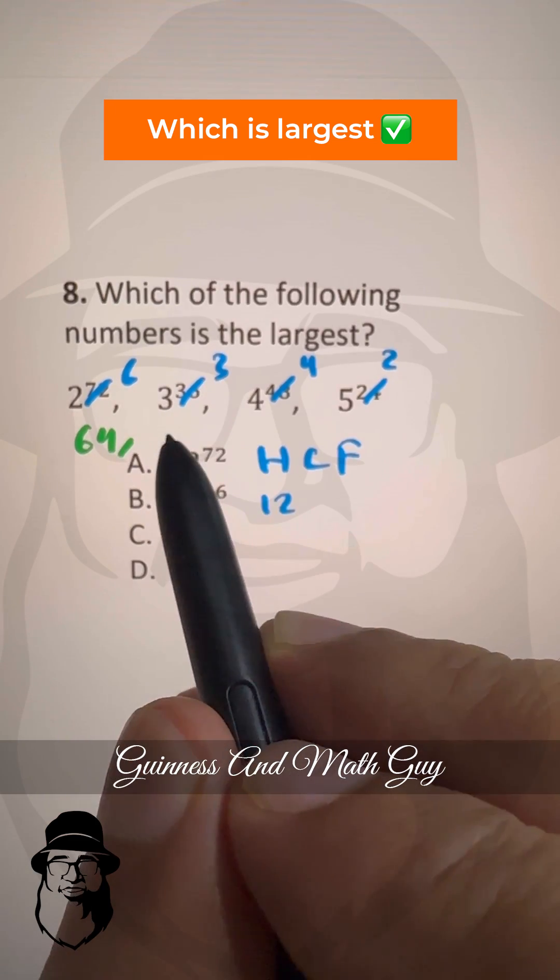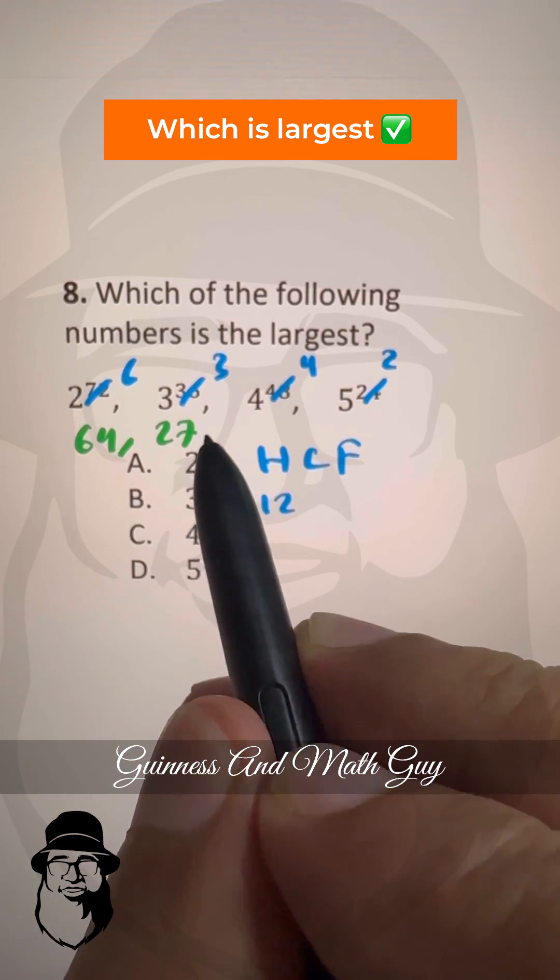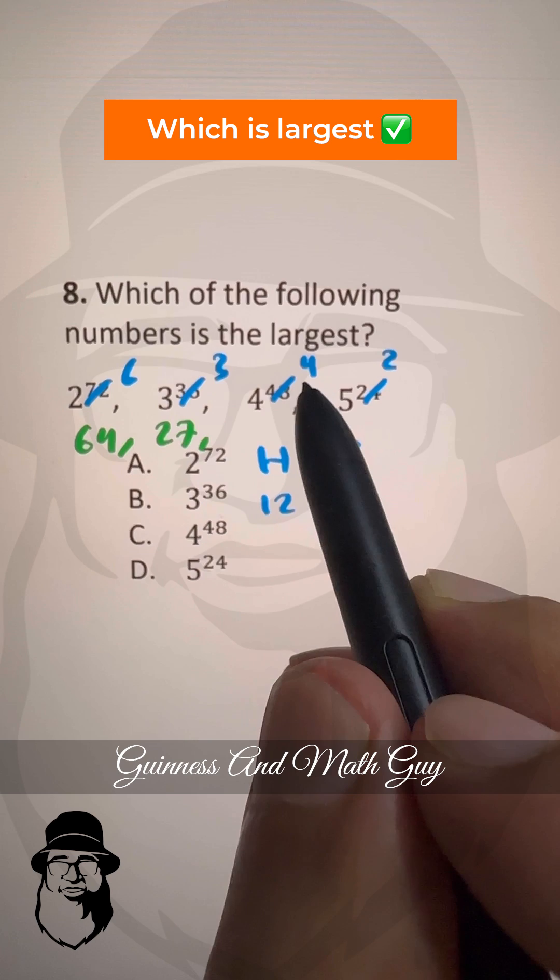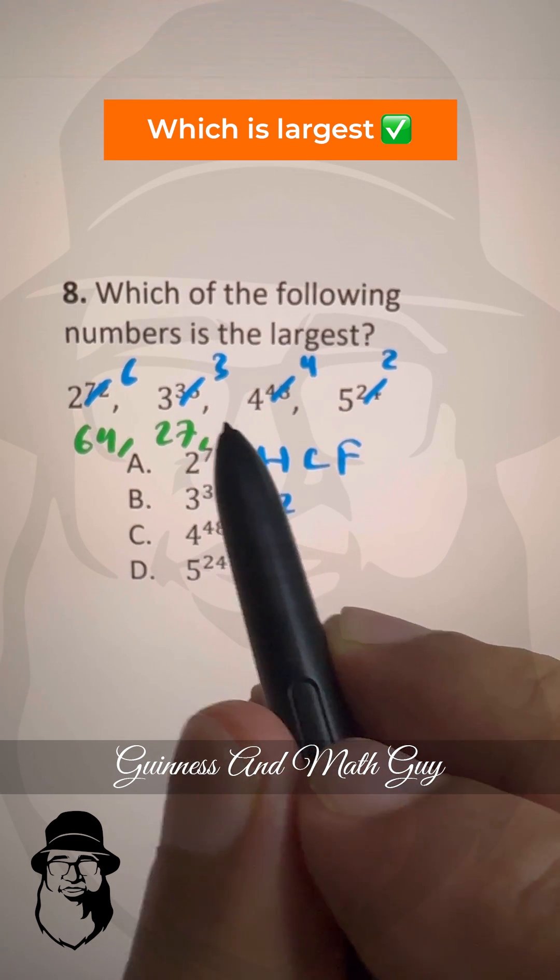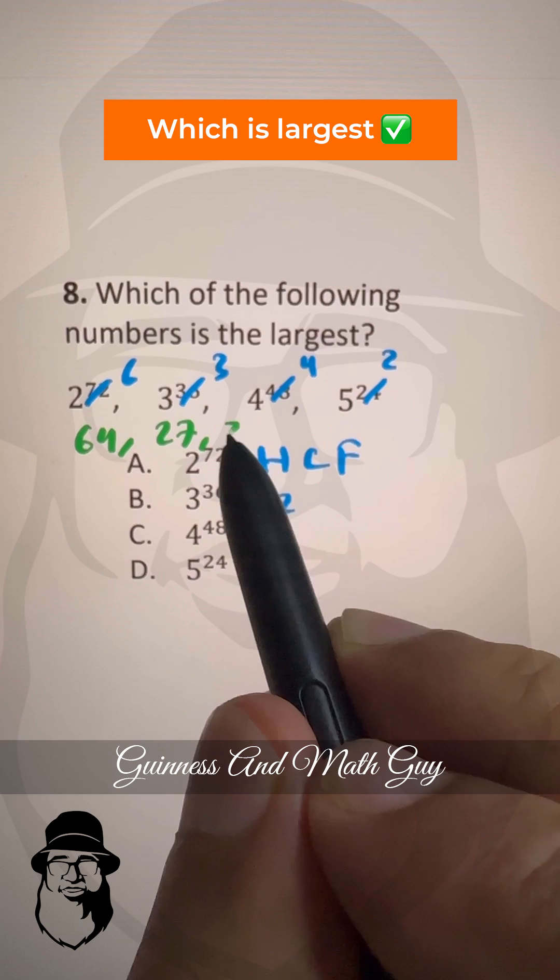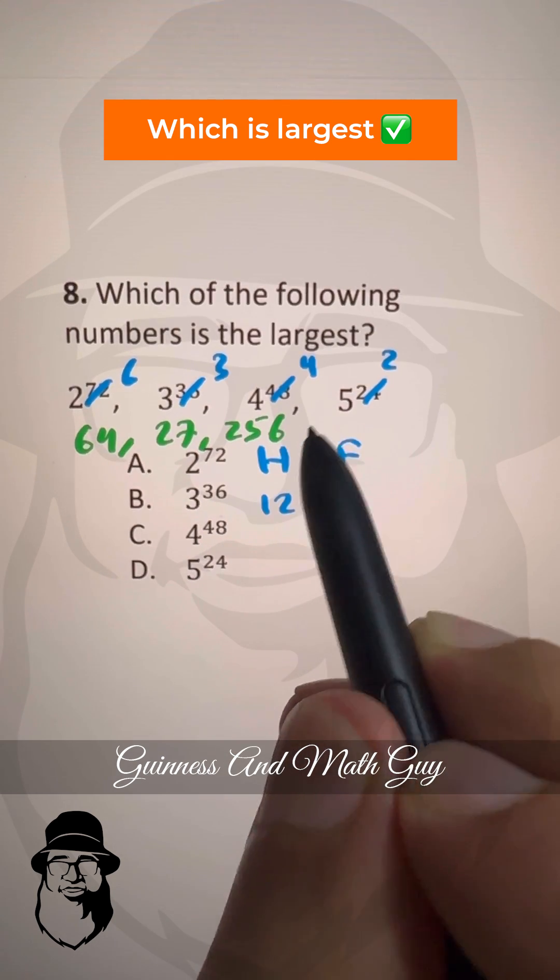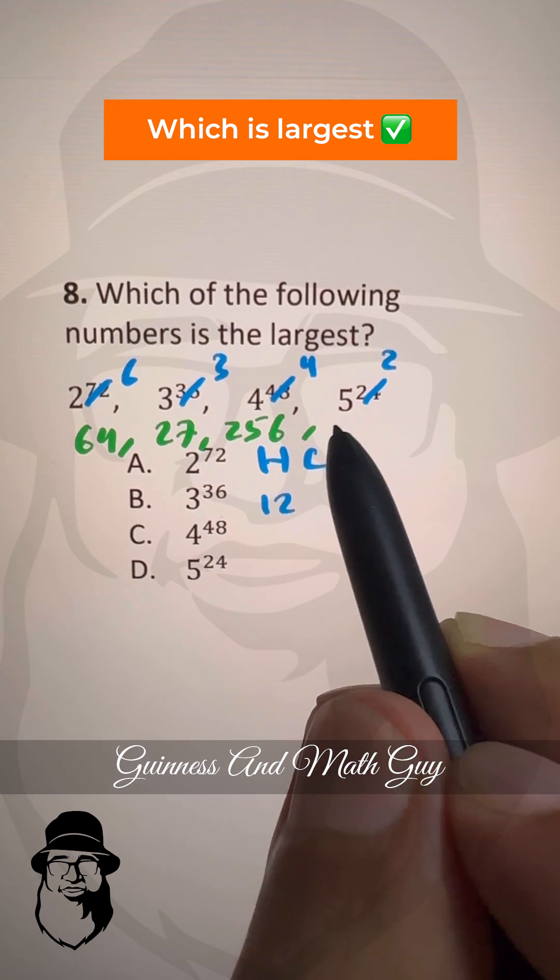Then 3 cubed is 27, 3 times 3 times 3 and 4 to the power 4 is, 4 squared is 16 and 16 times 16 is 256. Then 5 squared is 25.